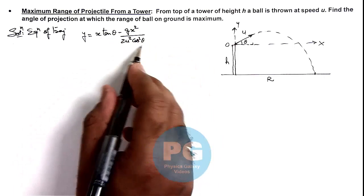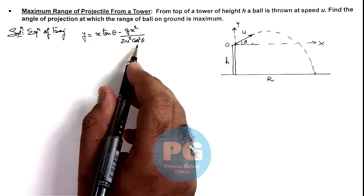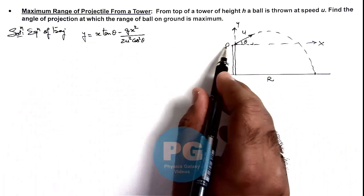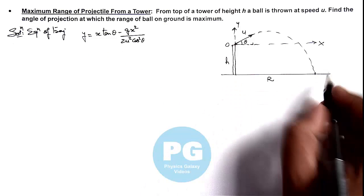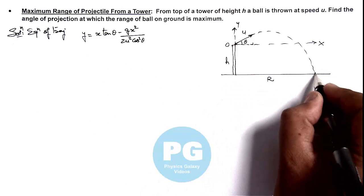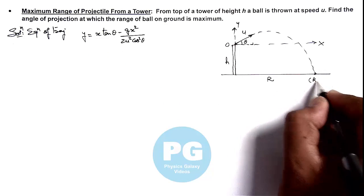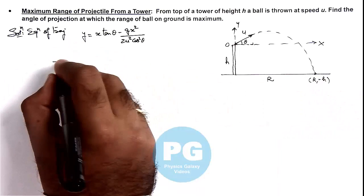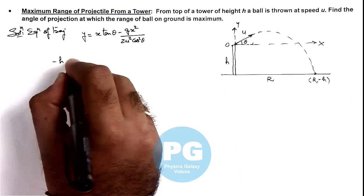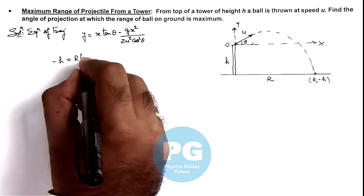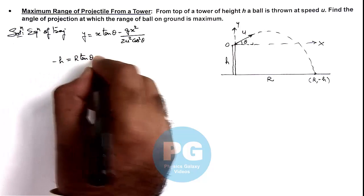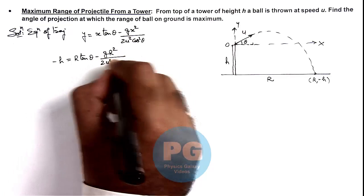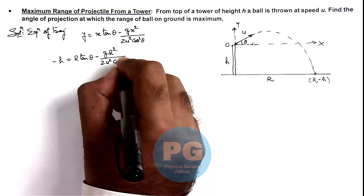If we substitute y = −h, we get the range as R, so this point will have coordinates (R, −h). We can write: −h = R·tan θ − (g·R²) / (2u²·cos²θ).